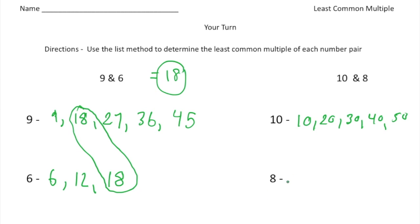And then for 8, 8 times 1 is 8. 8 times 2 is 16. 8 times 3 is 24. 8 times 4 is 32. And 8 times 5 is 40. There it is. If you notice, we have a common multiple here of 40. So the least common multiple of 10 and 8 is 40. How'd you do?